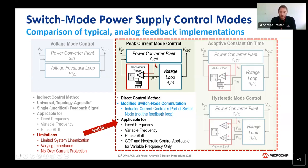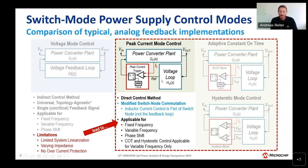Peak current mode control is the starting point when looking into average current mode control, because there are differences but also many similarities. We can derive a lot of the control techniques from peak current mode control implementations and apply them to an average current mode controller.